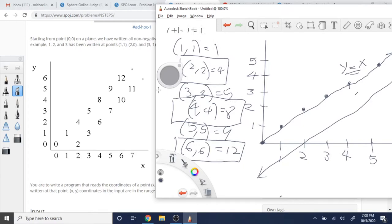3,3 gives you 5 because 3 plus 3 minus 1 is equal to 5. And then 5,5 gives you 9 because 5 plus 5 minus 1 is equal to 9, okay? So this is the first for the line y equals x, okay?